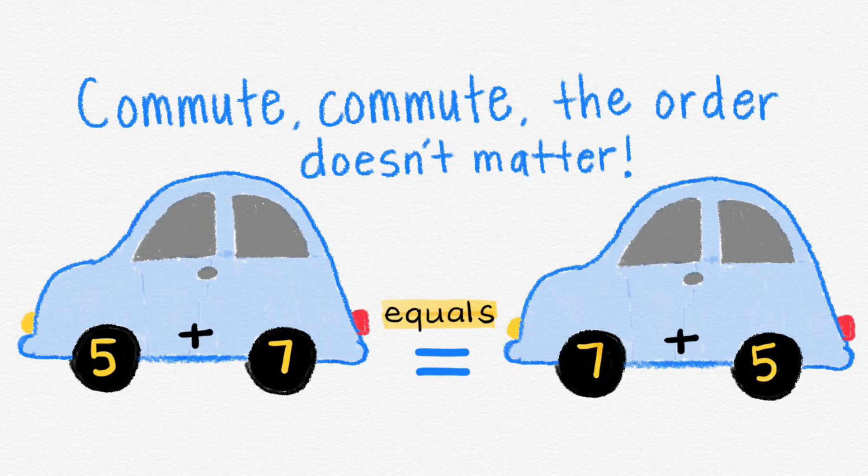That means that you can have 5 plus 7 and you can change the order of 5 plus 7 to 7 plus 5 and they would still both be equal. 5 plus 7 equals 12 and 7 plus 5 is also 12.